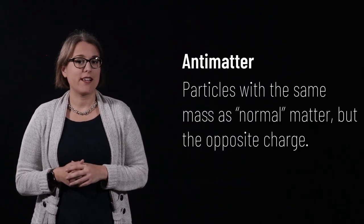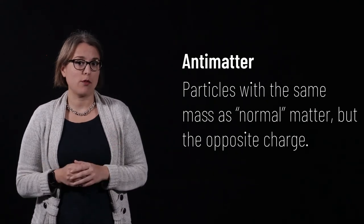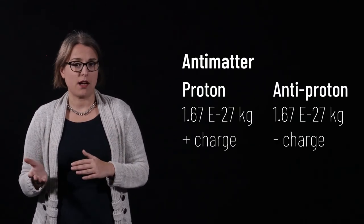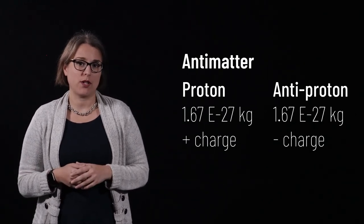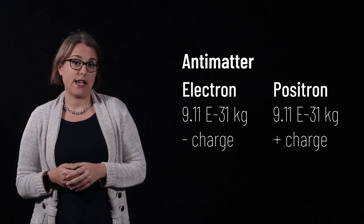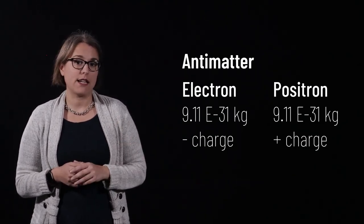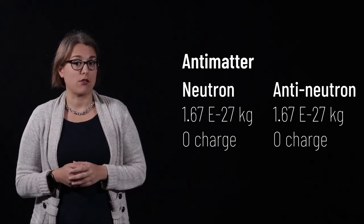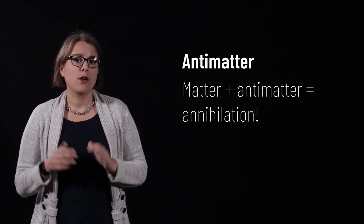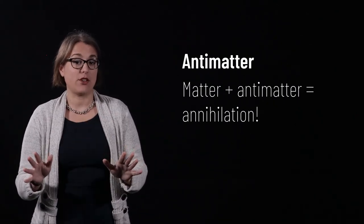Is that all there is to the universe? Protons, neutrons, and electrons? Not exactly. First, let's talk about antimatter. Antimatter particles have the same mass as normal matter, but the opposite charge. Protons have an antiparticle known as the antiproton, which are negatively charged particles with the same mass as a proton. Electrons have an antiparticle known as the positron, which is a positively charged particle with the same mass as an electron. Neutrons also have an antiparticle known as the antineutron.